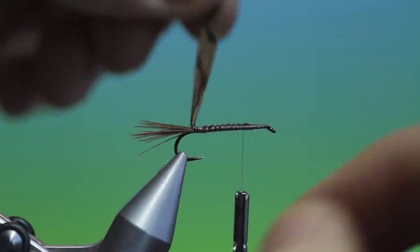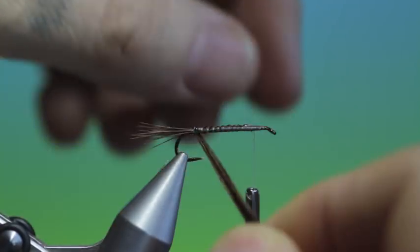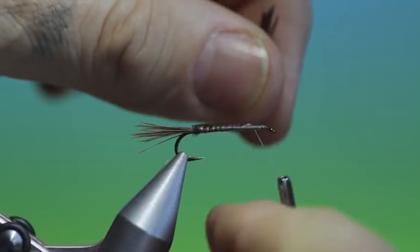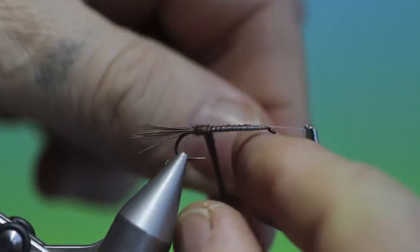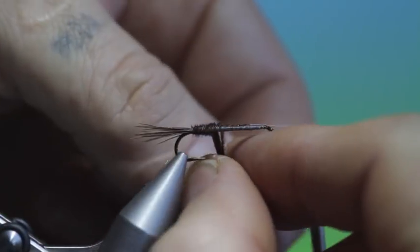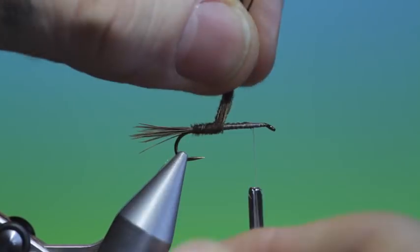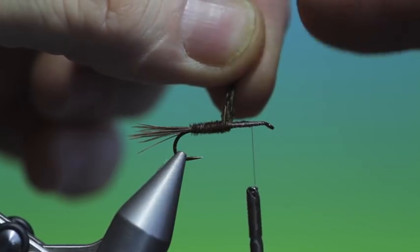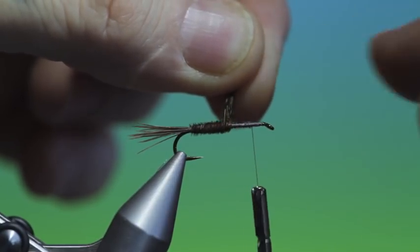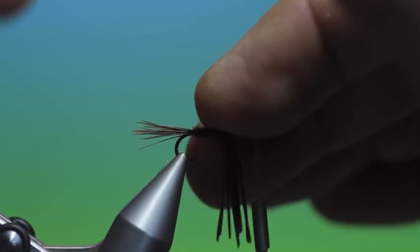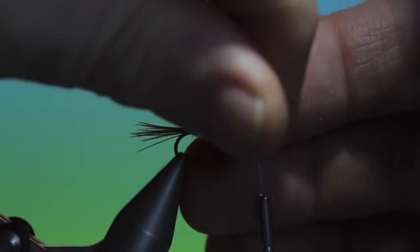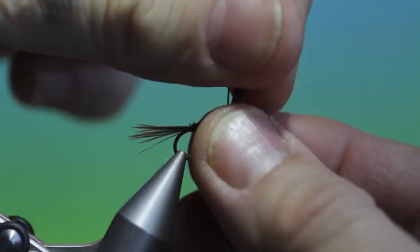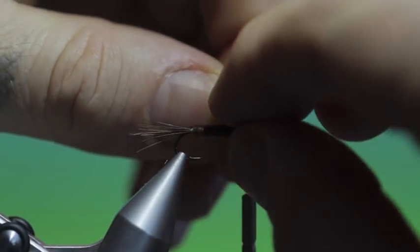Then we don't want to twist these. We want to try and keep the fibres parallel. And we'll go around over the body. Now when you get so far and the fibres start getting short what you can do is hold them in position with one finger as you take hold of them and then hold them in position again. Bring them over.